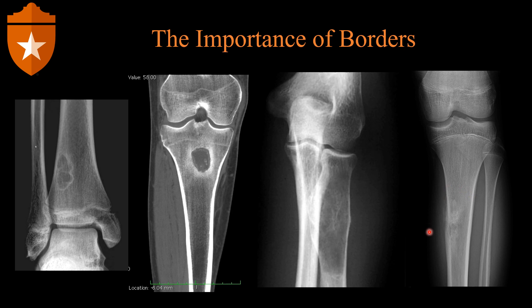The last image shows a lesion in the proximal tibial diaphysis from an aggressive tumor. You cannot trace a line around this lesion — you don't know where it begins or ends. This is called a wide zone of transition, and it tells us the lesion is very aggressive and vascular. Osteoclastic activity is moving forward across the bone unchecked; osteoblasts have been unable to define a border, stop the lesion, or produce any bone barrier. This is the most aggressive pattern.